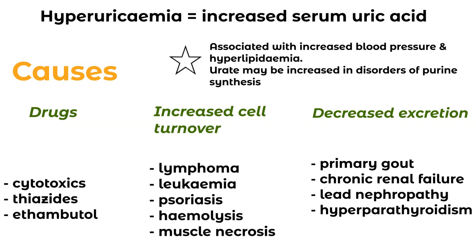Another way to categorize things is primary gout versus secondary gout. Primary gout is related to under-excretion or over-production of uric acid, and it's often associated with a mix of dietary excesses, alcohol overuse, and metabolic syndrome. Secondary gout is related to medications or conditions that cause hyperuricemia, like we mentioned a few moments ago.